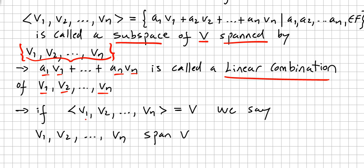If you pick a set of vectors V1, V2, ..., Vn and you check what kind of space they span, and if you get the vector space itself, we say that V1, V2, ..., Vn span V.